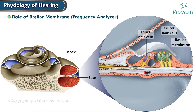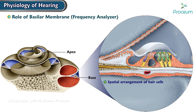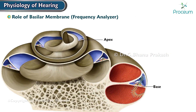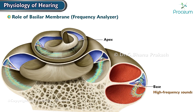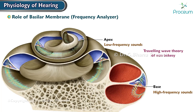The hair cells of the organ of Corti are located on the basilar membrane and respond to its mechanical vibrations by generating electrical signals transmitted to the brain. The spatial arrangement of hair cells corresponds to the frequency analysis, with hair cells at the base responding to high-frequency sounds and those at the apex responding to low-frequency sounds. This gives the appearance of a traveling wave in the basilar membrane, described by the Traveling Wave Theory of Von Bekesy.